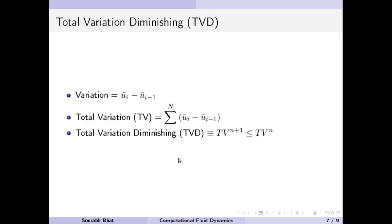Let us talk about another concept called total variation diminution. The variation is defined as the change of the variable — the average at cell i minus cell i-1. Total variation is simply the summation of all these values over the complete domain.